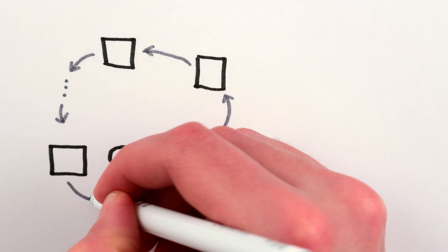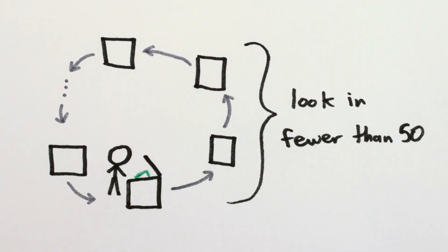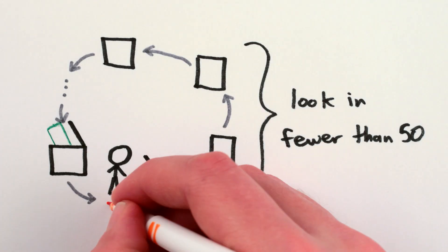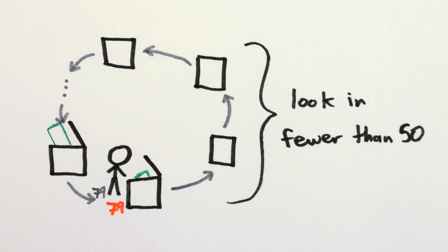And of course, if you end up back where you started within 50 boxes, you've won, because that means the previous box had a dollar bill that told you to go to your starting point, and you started on your number, so the previous box's dollar bill was yours.